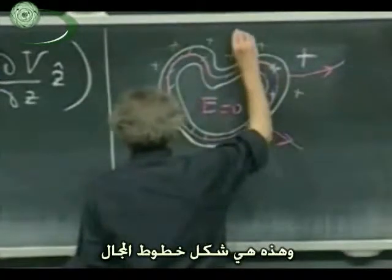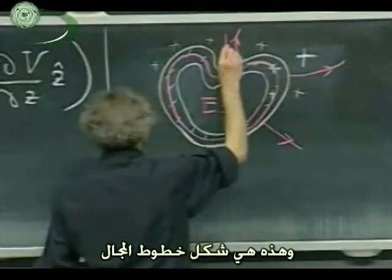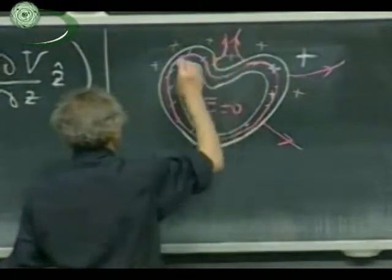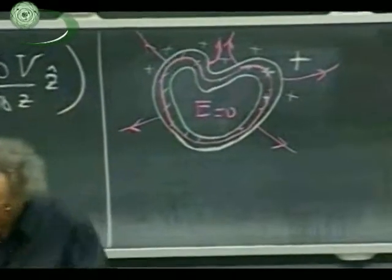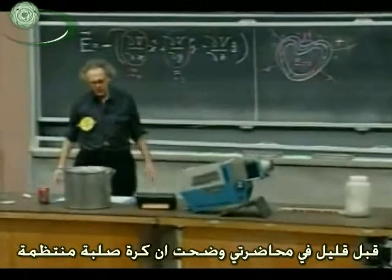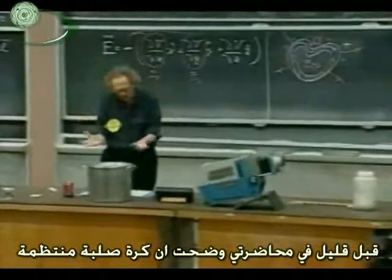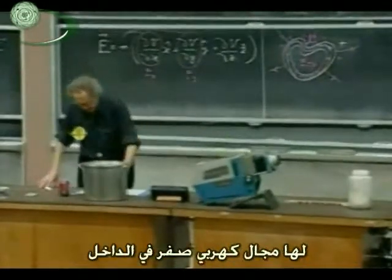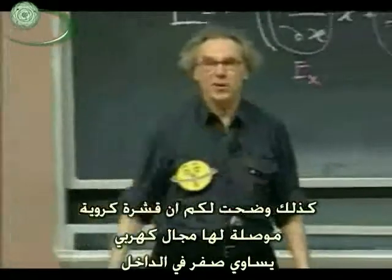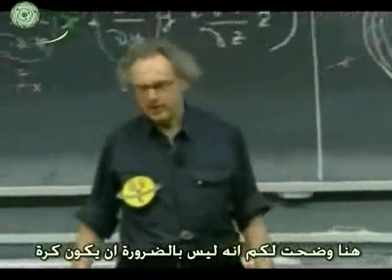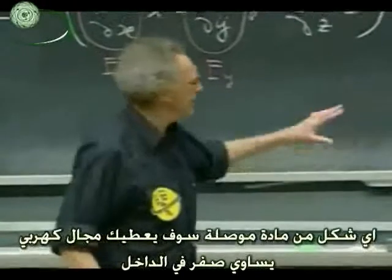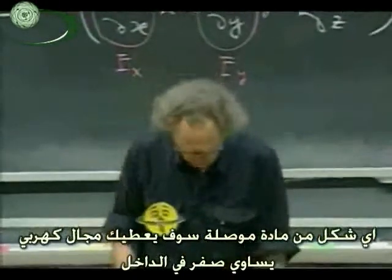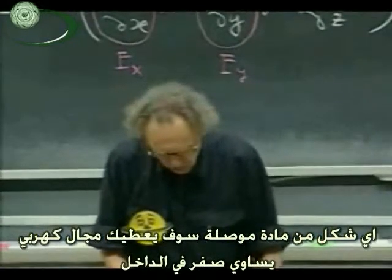So you get very funny field lines that go like this — they have to be perpendicular locally where they reach the hard wall. Earlier in my lectures I showed that a uniformly solid sphere has electric field zero inside, and I even showed that a hollow conducting sphere also has zero electric field inside. Today I have demonstrated that it doesn't have to be a sphere — you don't need spherical symmetry. Any shape, provided that it is a hollow conductor, will give you an electric field of zero inside.